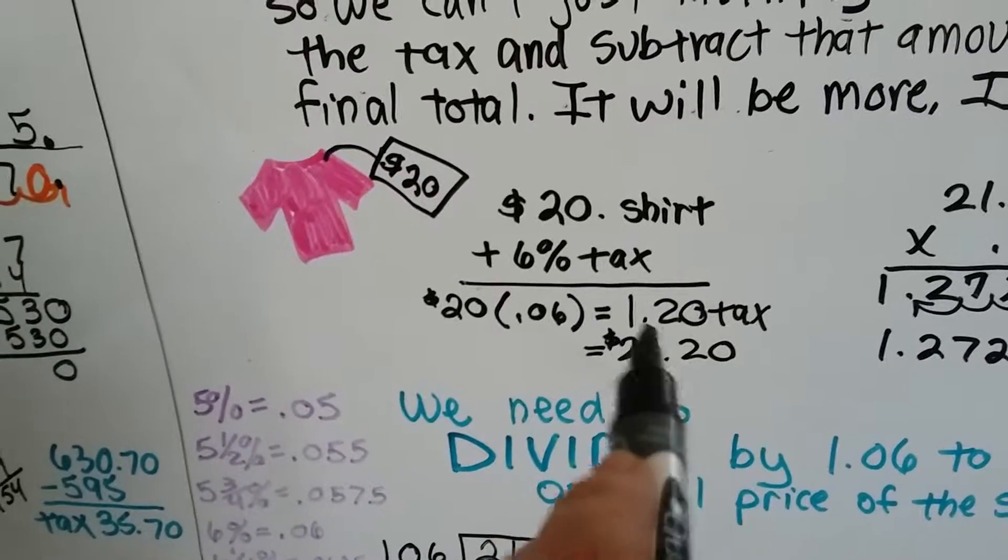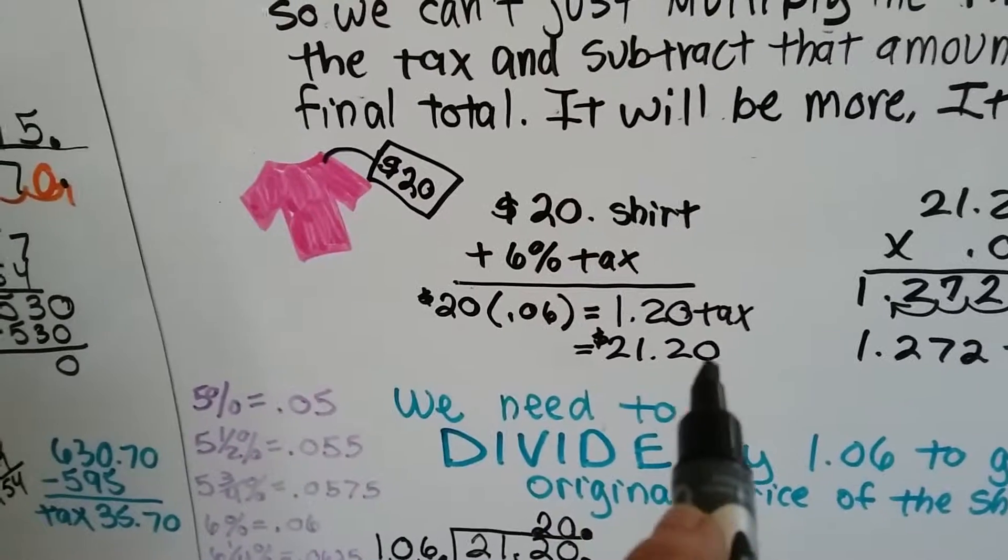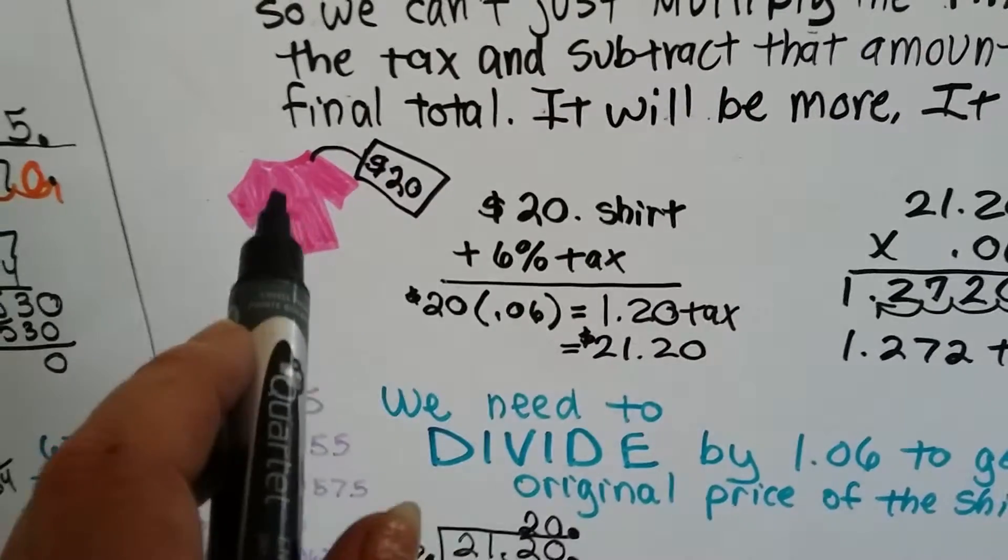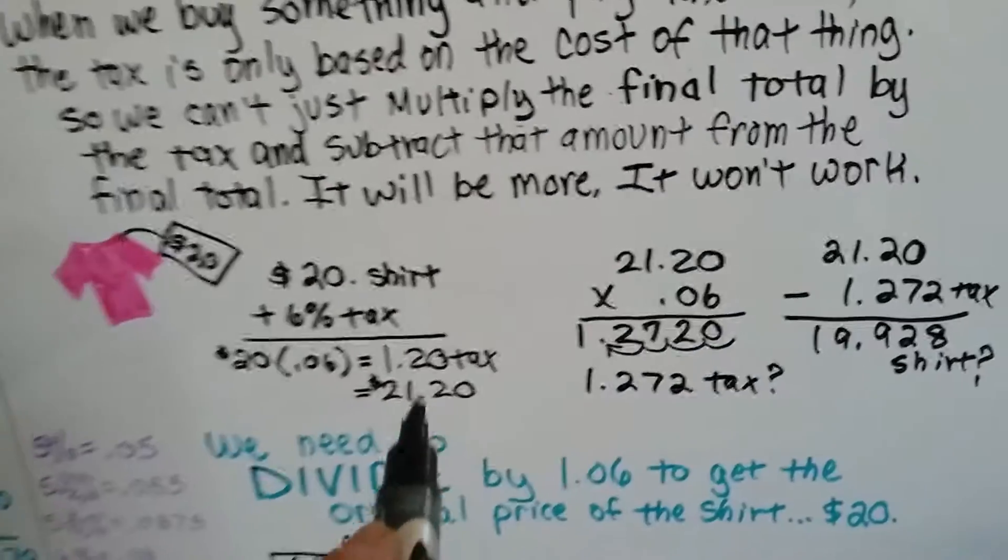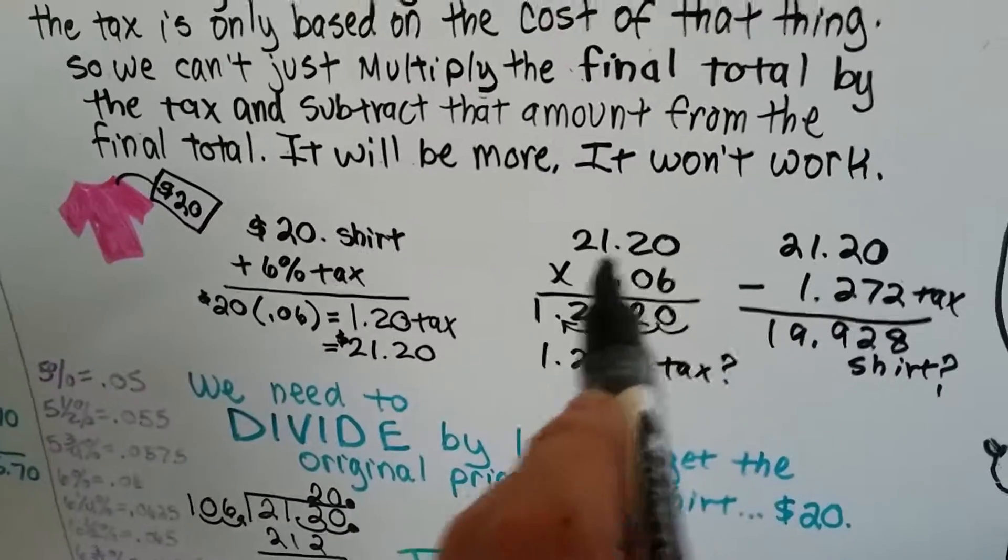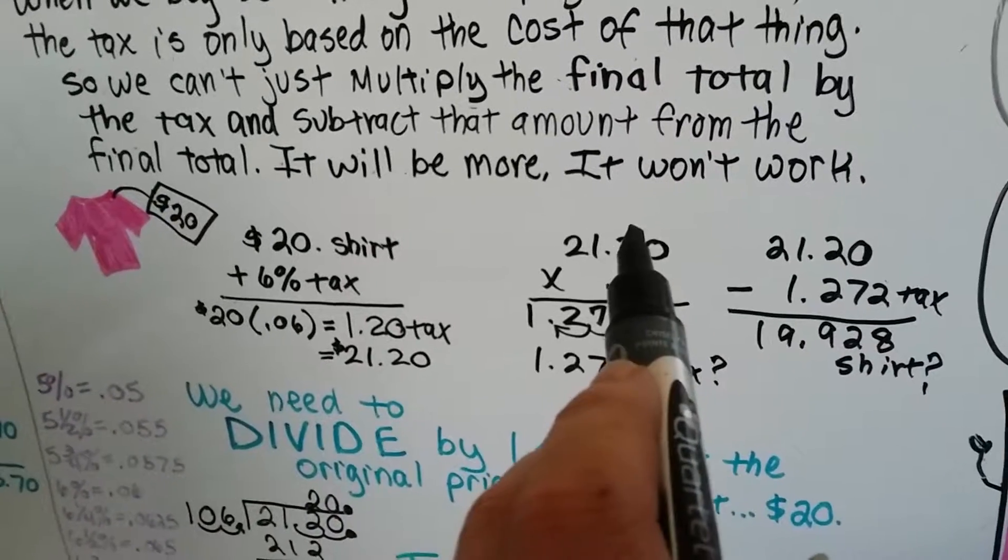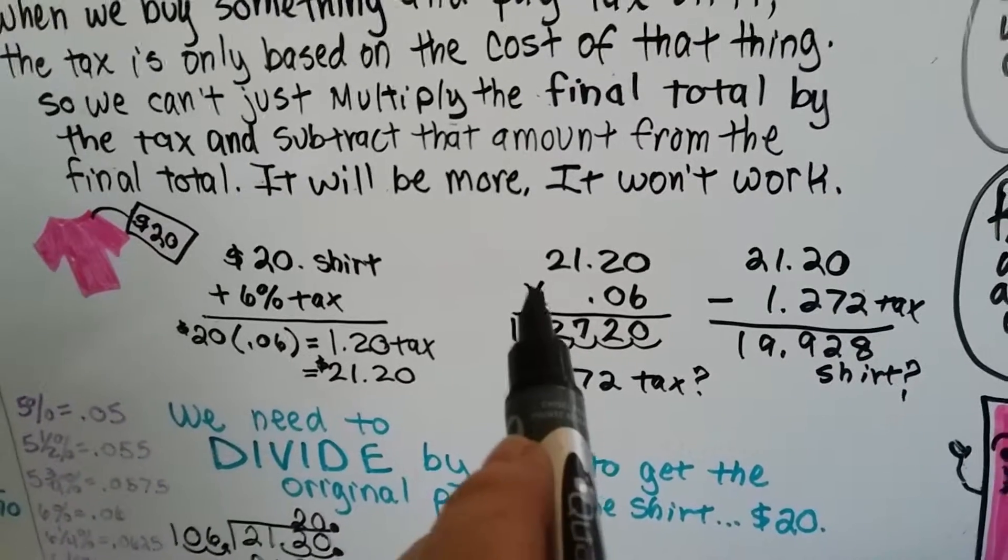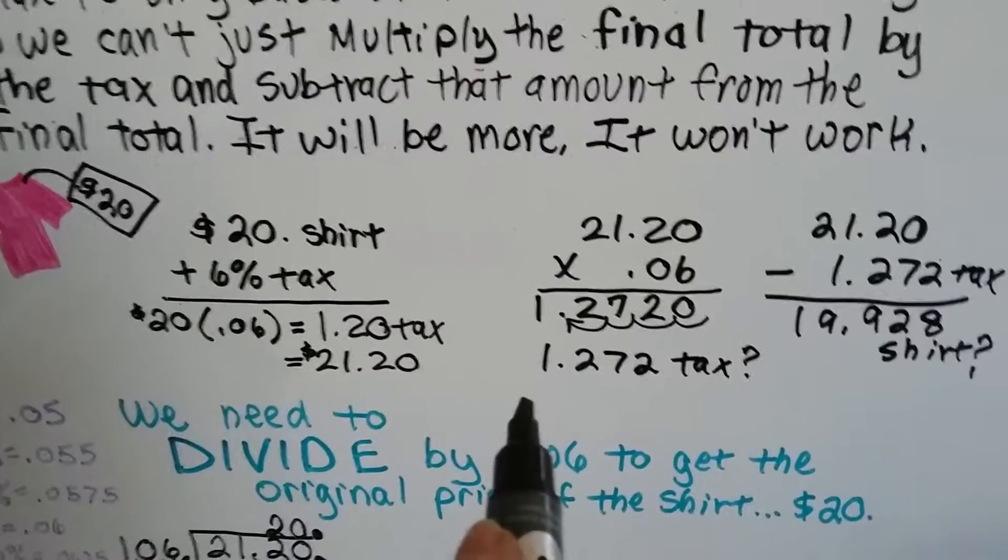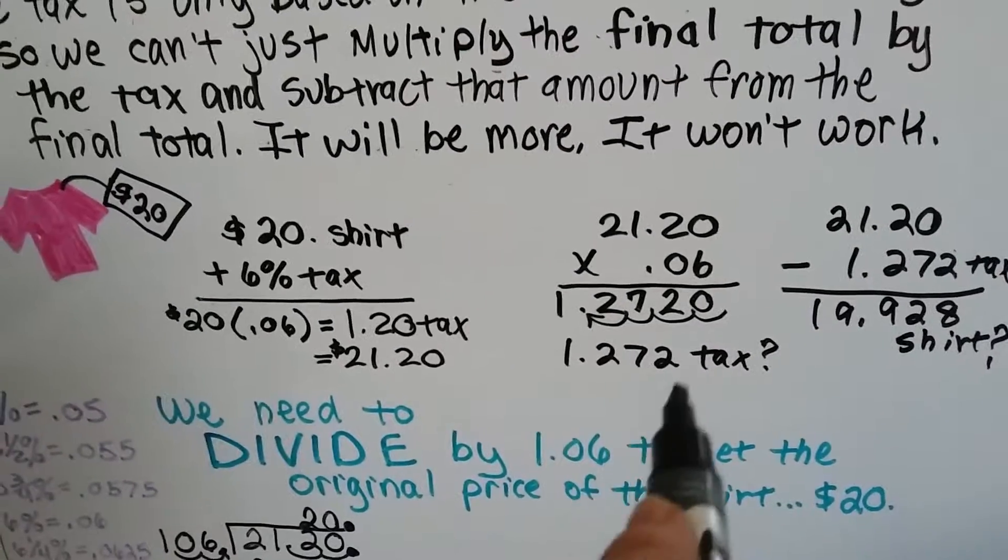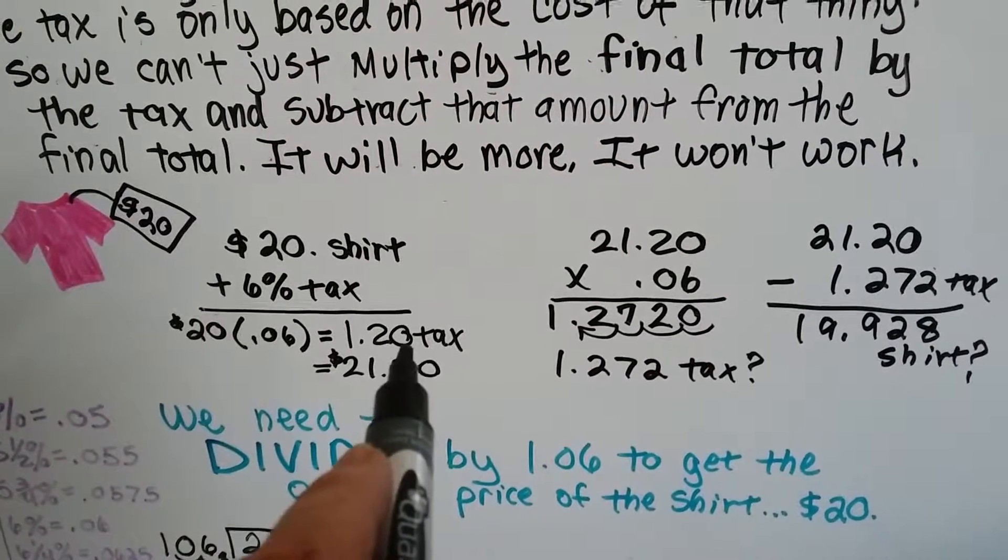Alright, so now we need to add this $1.20 to the cost of the shirt and we get $21.20 before we can walk out the door with that in a bag. That's our final. Now let's say we've got the $21.20 and we want to find out what the tax was on it. So we're going to try just multiplying that by .06. But when we do, we come up with 1.272. Well that's a lot bigger than 1.20. What happened?